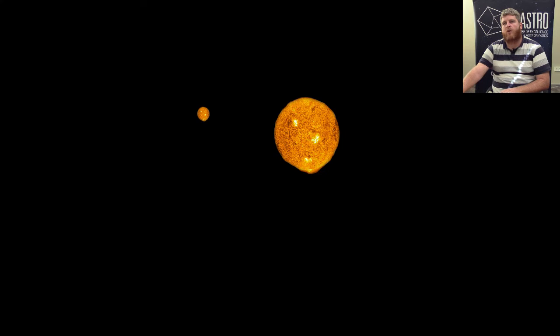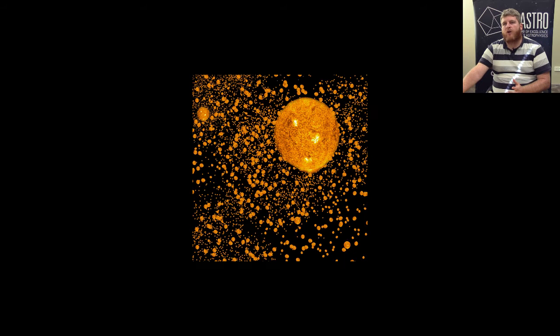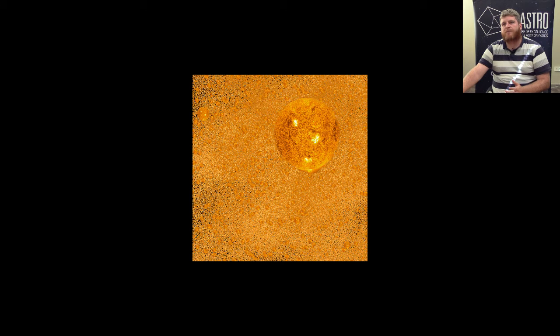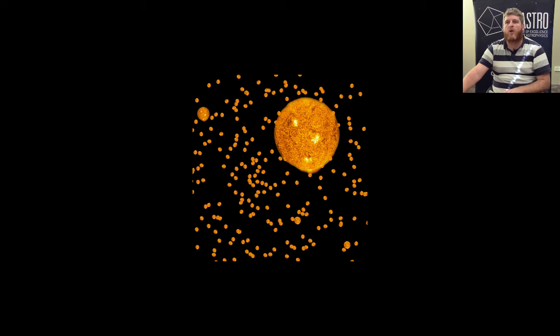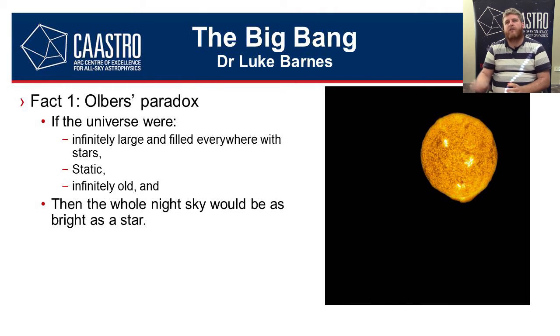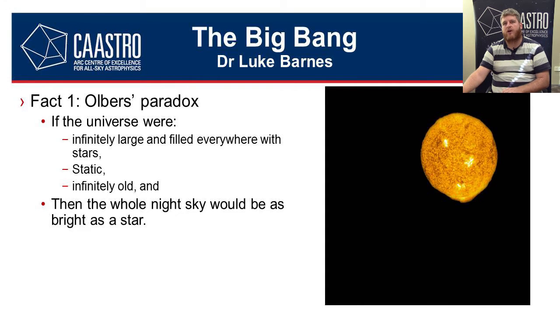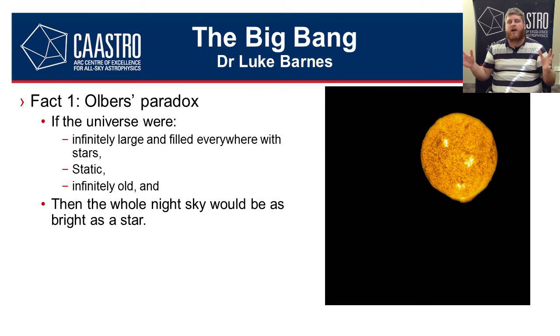In that case, as you look further and further away, stars will start to fill in the gaps between all the other stars. The fact that they're further away means they look smaller, but there are more and more of them. So if we could see infinitely far and the universe was just full of stars, then the entire night sky would be as bright as a star — that is Olbers' Paradox. We had a theory: the universe is infinitely large, filled everywhere with stars, static, and infinitely old. We got a prediction: the whole night sky would be as bright as a star. That prediction is wrong — so one of those assumptions has to go. That simple picture of a universe with stars all over the place just sitting there is wrong. Something about it has to change. That's fact number one.